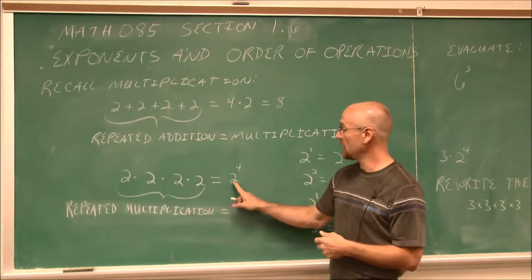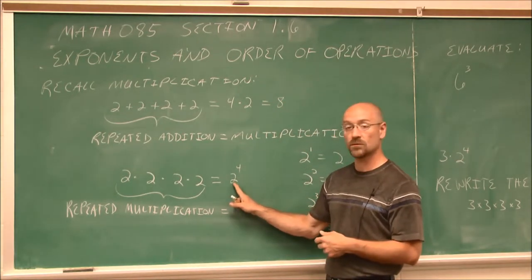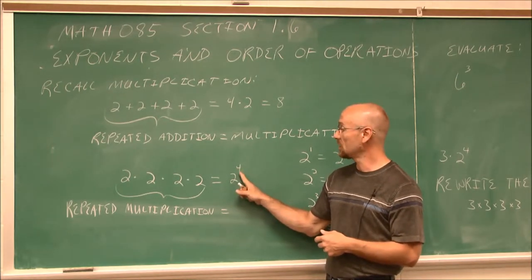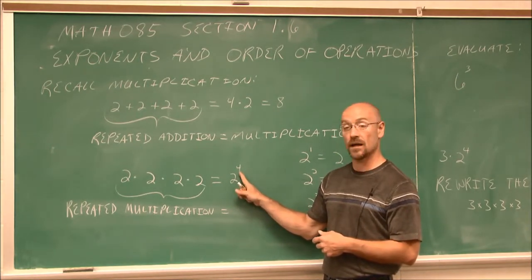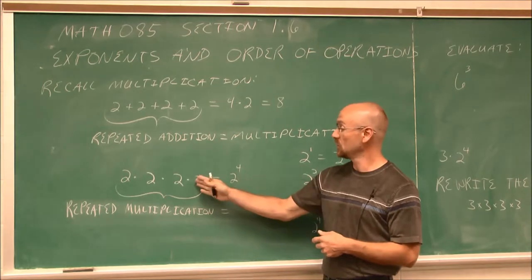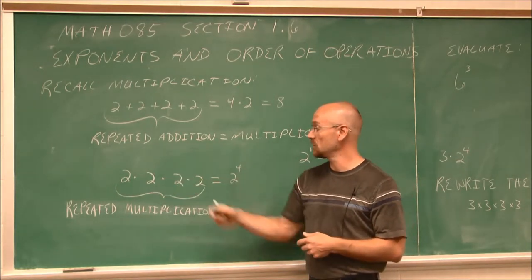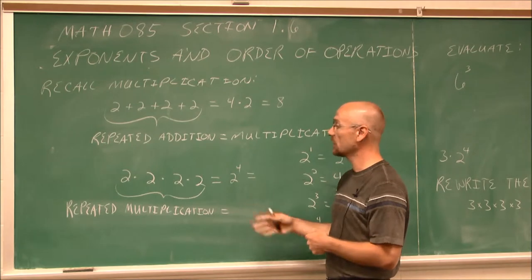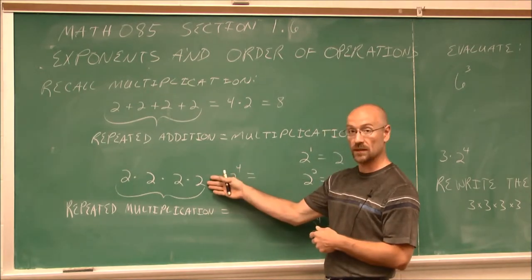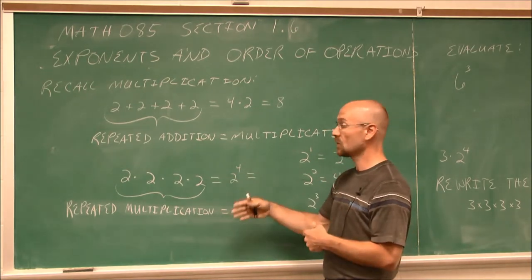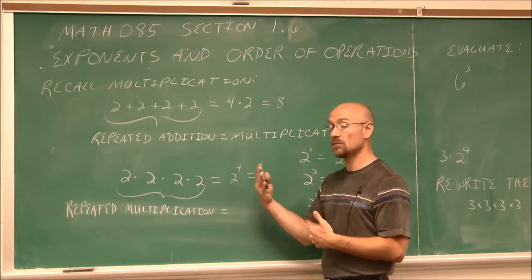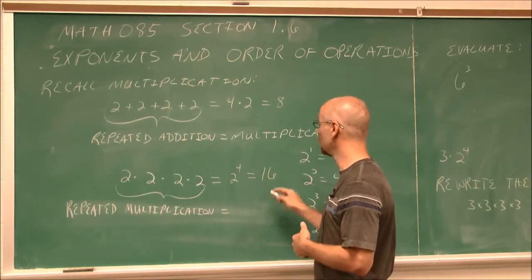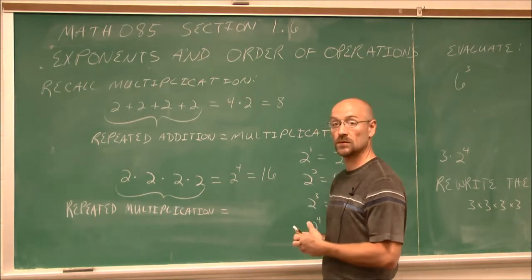This indicates that I'm going to take this factor, which we call the base, and multiply it 4 times — which means 2 times 2 times 2 times 2. If we actually do that: 2 times 2 is 4, times 2 is 8, times 2 is 16. So 2 to the fourth equals 16.